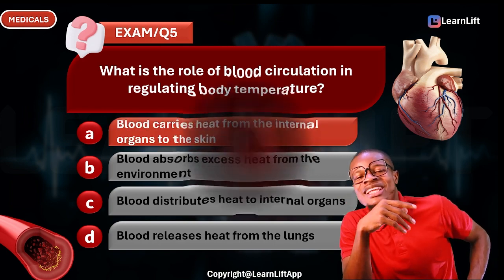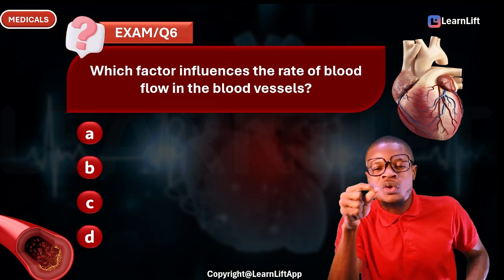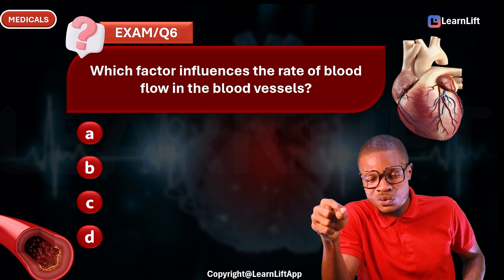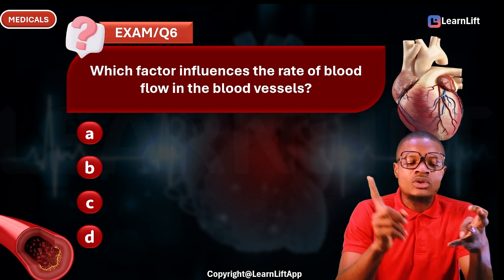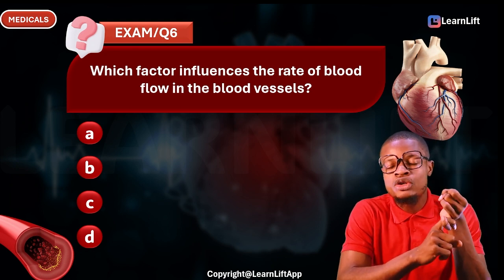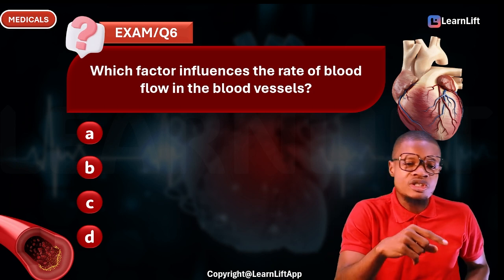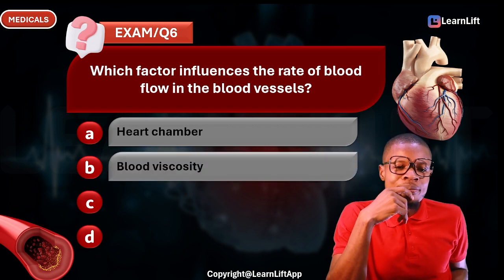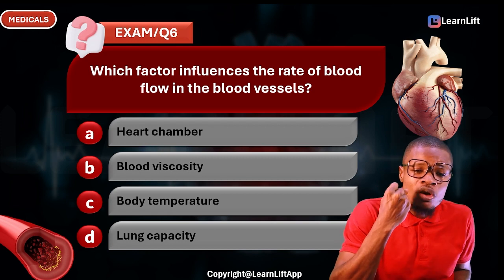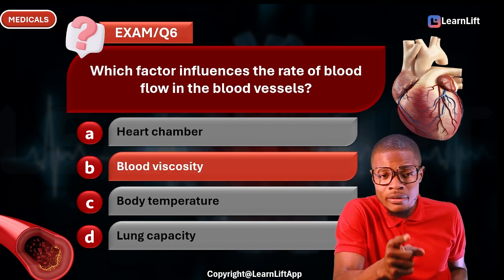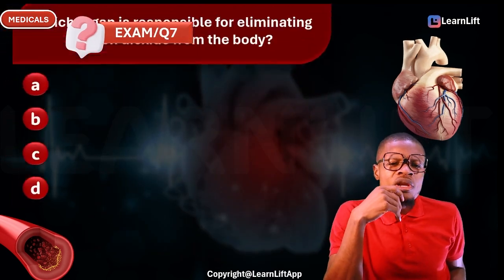Question six: Which factor influences the rate of blood flow in blood vessels? The three major factors are: vessel diameter, vessel length, and blood viscosity. Option A: chamber size. Option B: blood viscosity. Option C: body temperature. Option D: lung capacity. The correct answer is Option B — blood viscosity — one of the three major factors we have looked at.